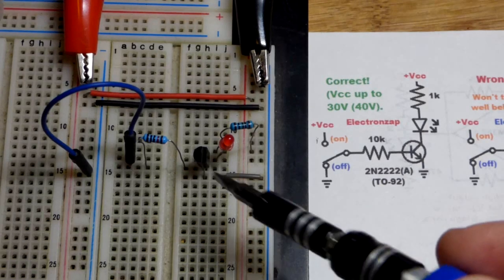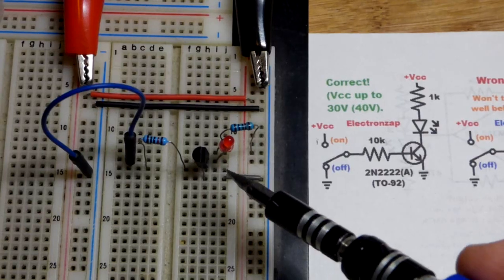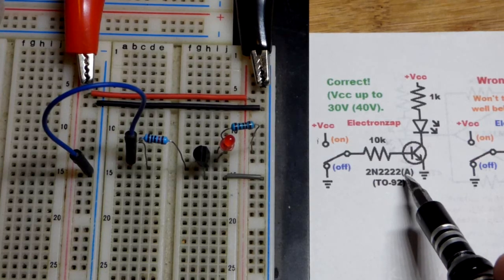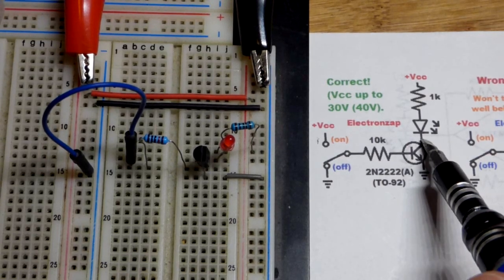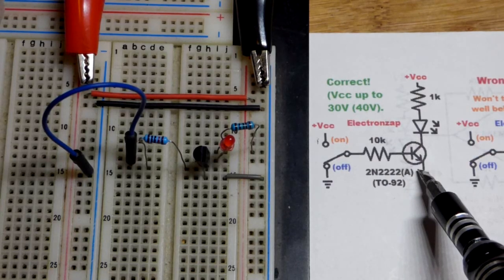So now in this video we're going to look at what can happen if you put an NPN bipolar junction transistor in backwards. This is the 2N2222A right there and it can handle up to, if it's not the A version, about 30 volts.